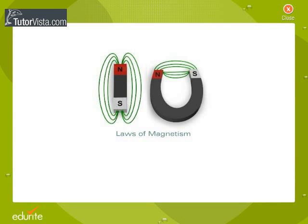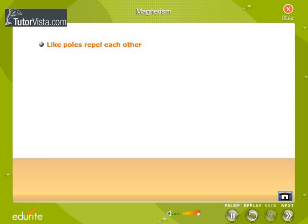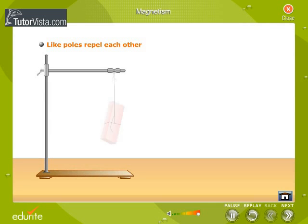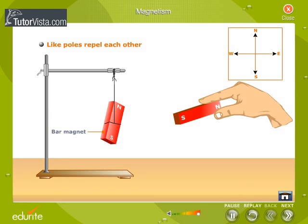Laws of Magnetism. Let us perform an experiment before stating the laws of magnetism. Suspend a bar magnet as shown here and allow it to come to rest. We observe that the magnet aligns itself in the north-south direction.